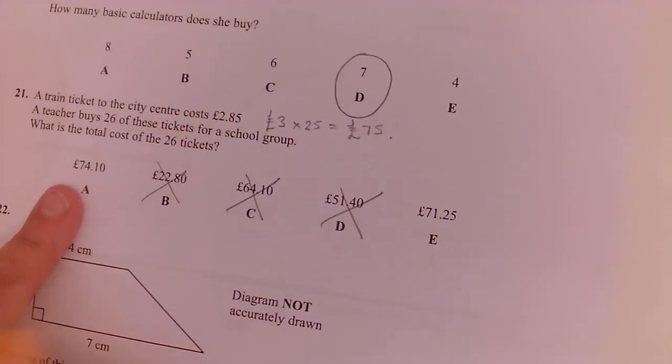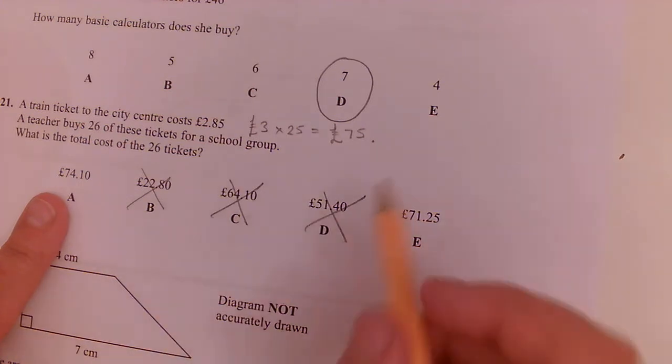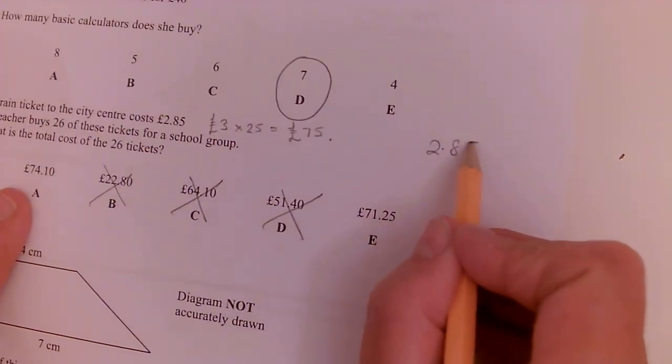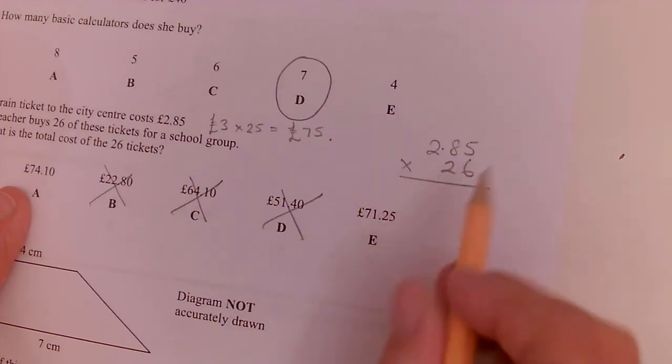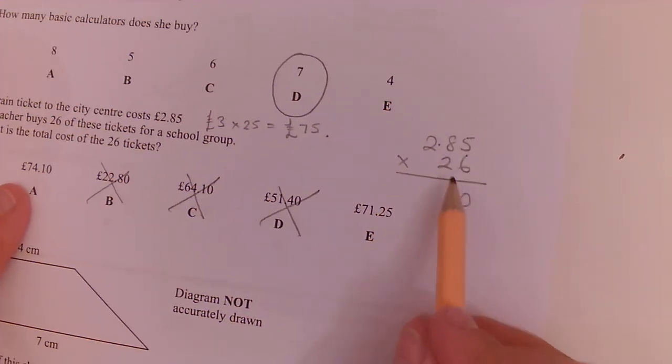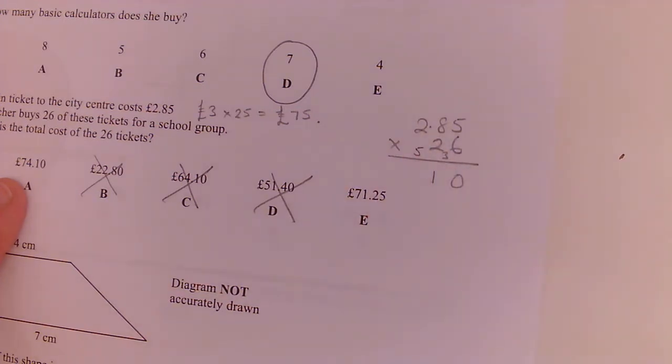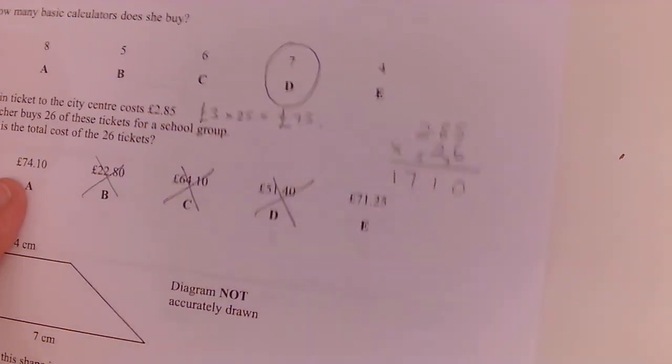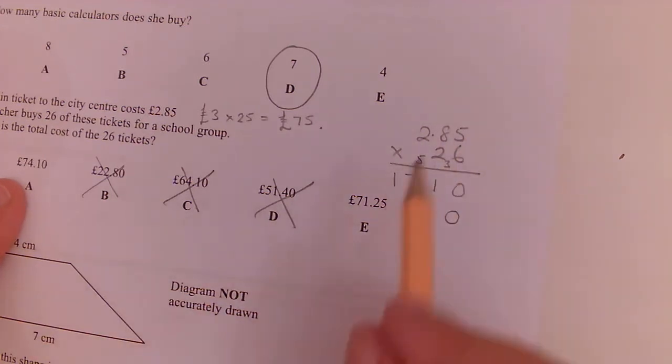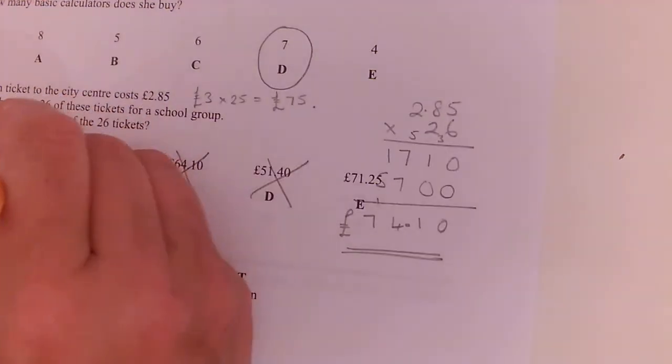We don't need to work it all completely out. Because if we do £2.85 and we times that by 26. We have 6 times 5 is 30. 6 times 8 is 48. So 48, 49, 50, 51. 6 times 2 is 12, plus the 5 is the 7. And then we can do the next one. So we're putting down the 0. 10, 17, and the 5. £74.10. If you wanted to work it all out completely. £74.10.